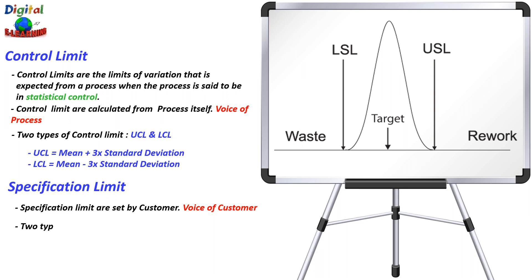Generally, there are two types of specification limits: the lower specification limit (LSL) and the upper specification limit (USL). These specification limits should be placed at a point where the losses due to variation equal the benefit of the product.